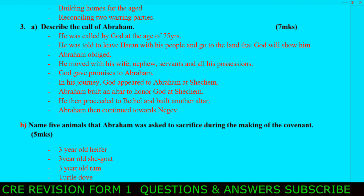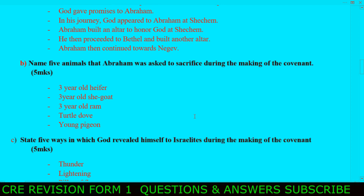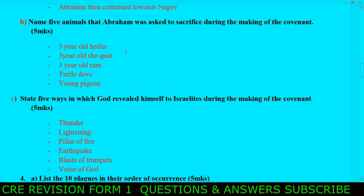Next question: name five animals that Abraham was asked to sacrifice during the making of the covenant. You must be very specific on this. Number one, a three-year-old heifer. Number two, a three-year-old she-goat. Number three, a three-year-old ram. Number four, a turtle dove. Number five, a young pigeon. Those are the things he was told to give as a sacrifice for the covenant.